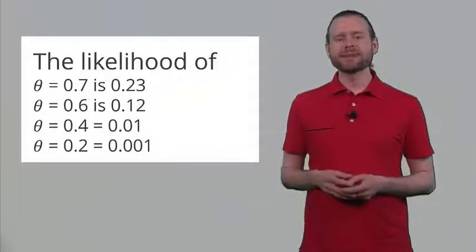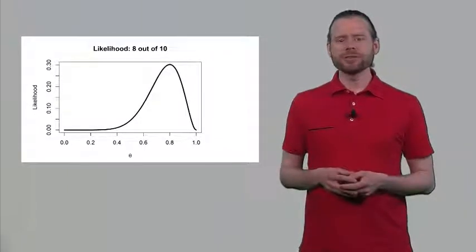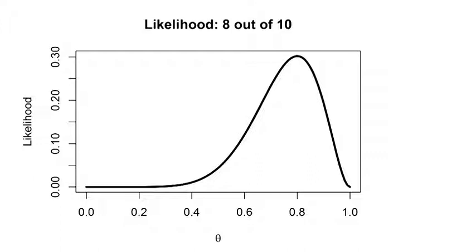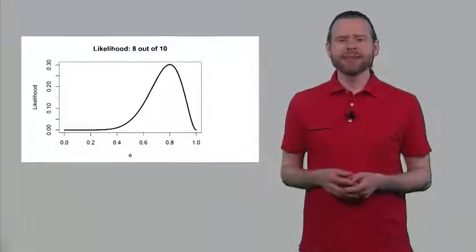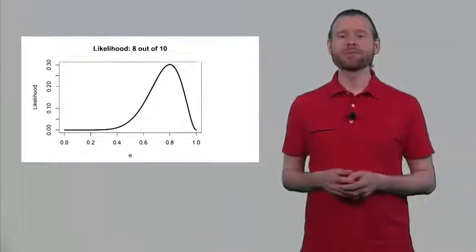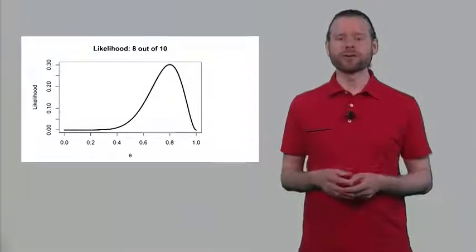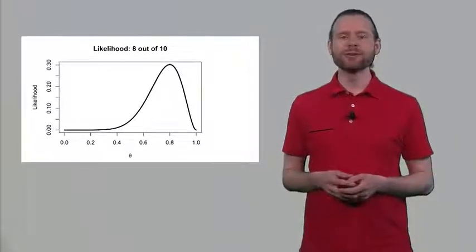These numbers are not very clear on their own, so let's take a look at the likelihood function. In this graph, the likelihood is plotted on the vertical dimension, and theta is plotted on the horizontal dimension, ranging from 0 to 1 — meaning we either always observe heads or never observe heads. Based on the data collected, it is not possible that we never observe heads or never observe tails, because 8 out of 10 turned out to be heads, so we have observed both values.